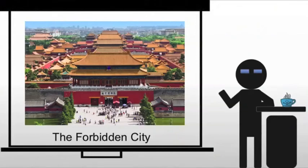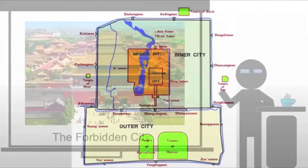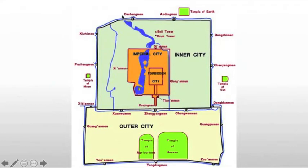The Forbidden City is primarily built during the Ming Dynasty in what is modern-day Beijing, and it is the centerpiece of a series of nesting-doll cities as we look at the old city of Beijing. We see the inner city, within that we see the imperial city, and within that we see the Forbidden City.